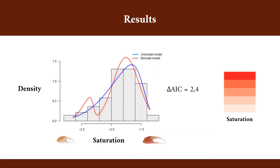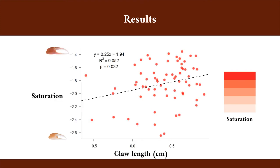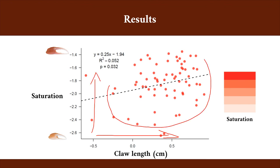Similarly to luminance, saturation is unimodally distributed, but the curve is left-skewed, meaning that intense colors are more common in the population. Also, long claws tend to have more saturated colors, but again, there's a lot of variation in the data.